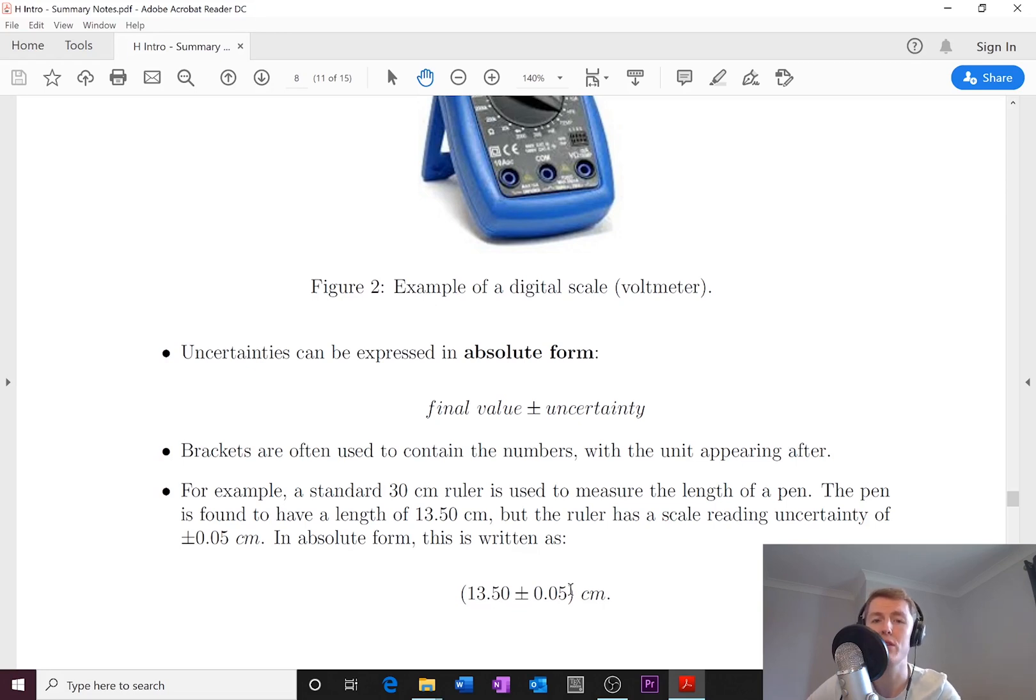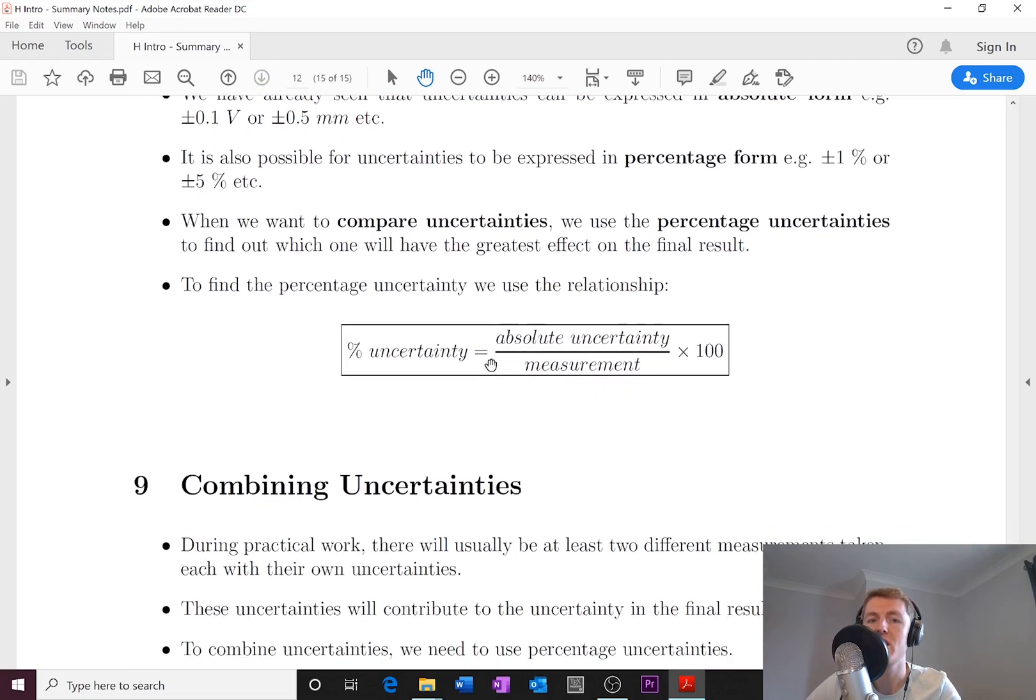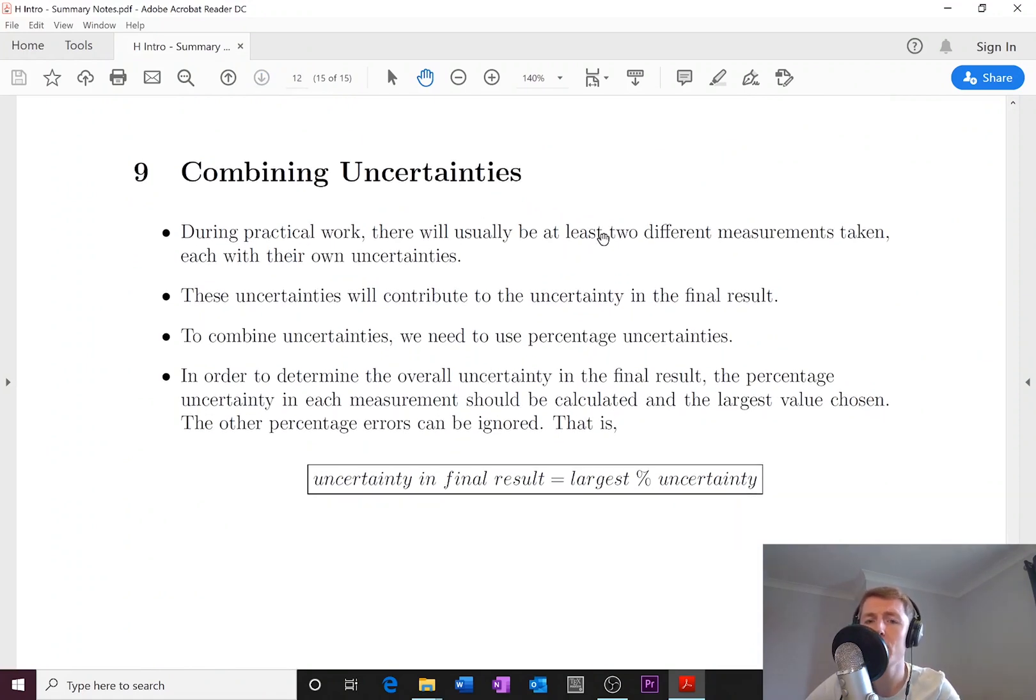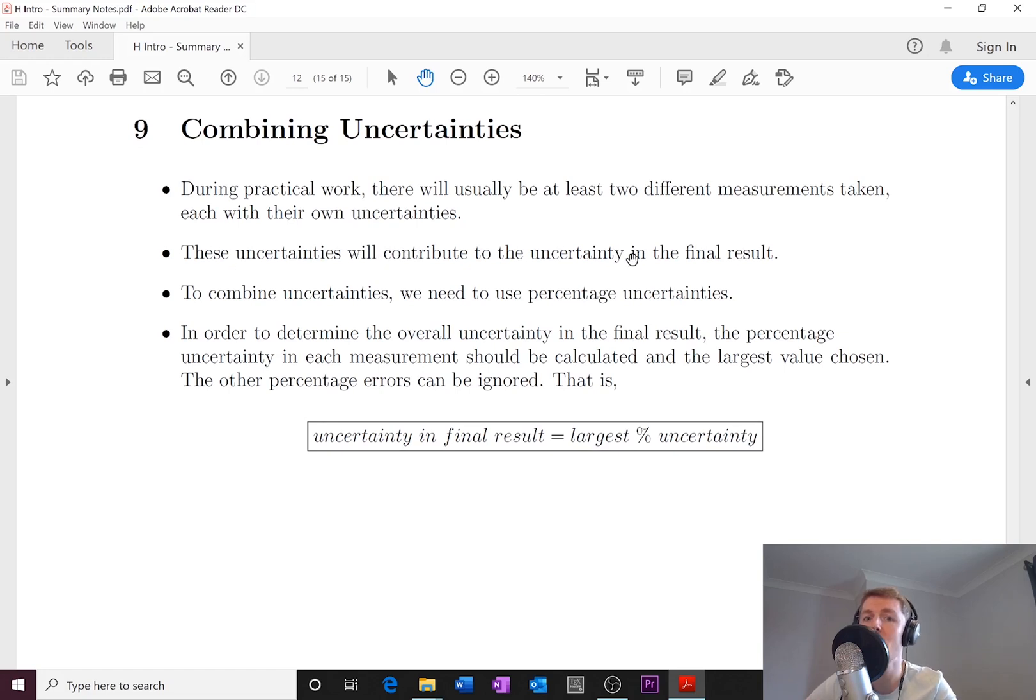Now let's look at why percentage uncertainties are really useful. When doing practical work there will usually be at least two different measurements taken, each with their own uncertainty. Let's go back to the example I talked about with speed, distance and time because that's a nice easy one to get to grips with. Let's say we have a distance measurement with an uncertainty, and we have a time measurement with an uncertainty.